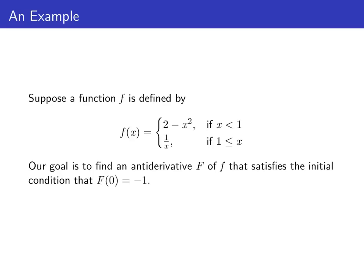Consider the example of the function little f defined by 2 minus x squared if x is less than 1, and 1 over x if x is bigger than or equal to 1. Our goal is to find one antiderivative, big F, of little f that satisfies the initial condition big F of 0 is negative 1.